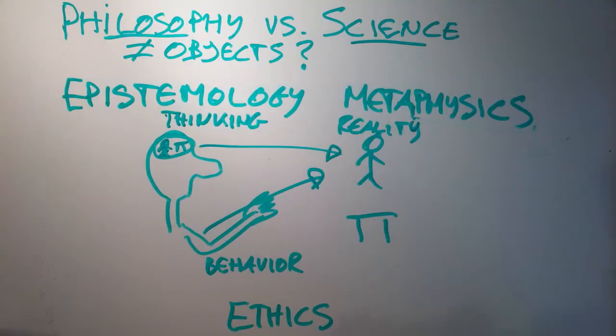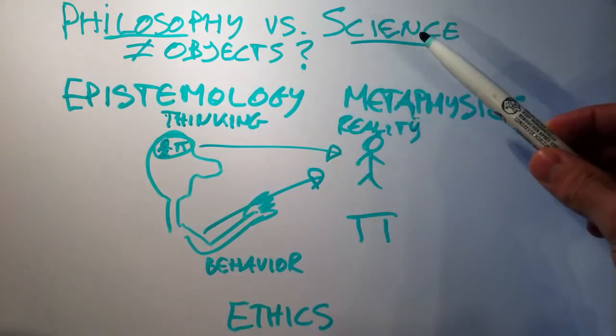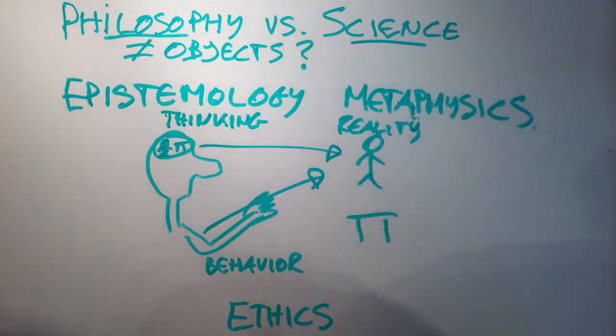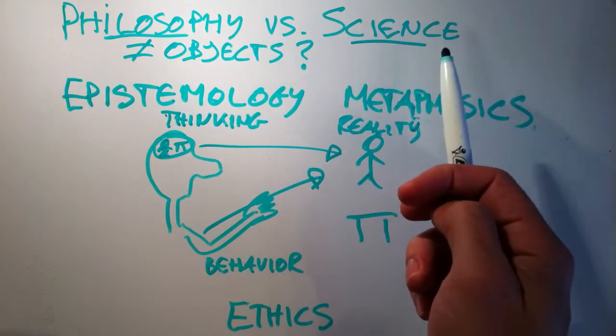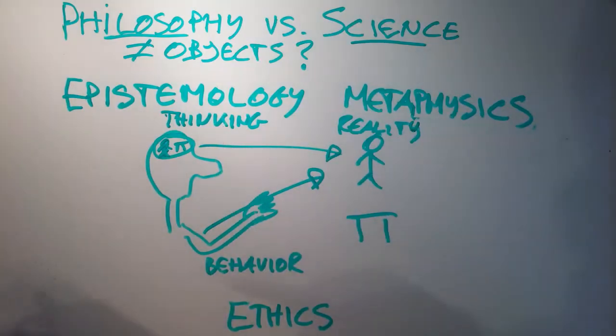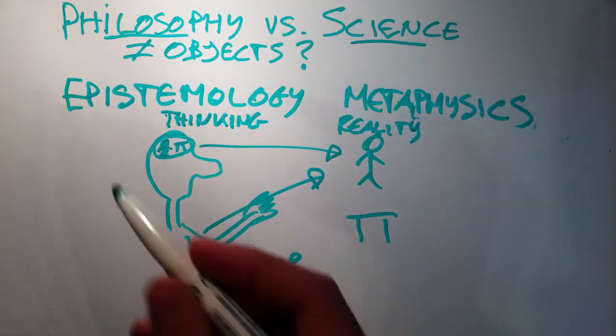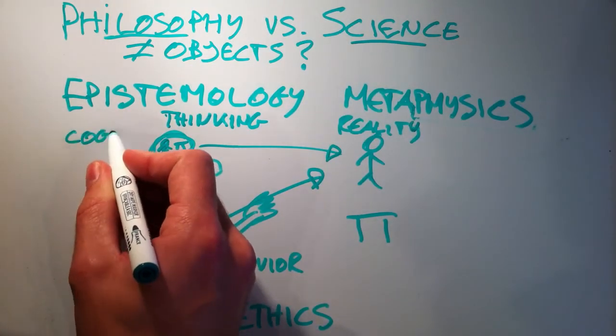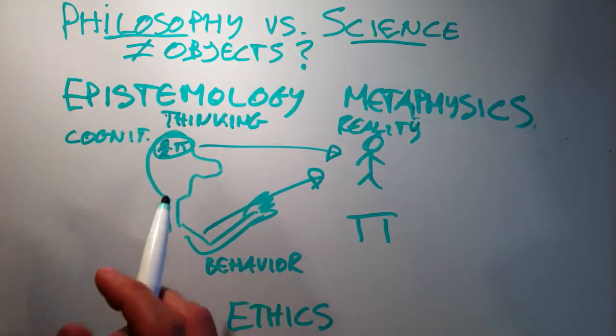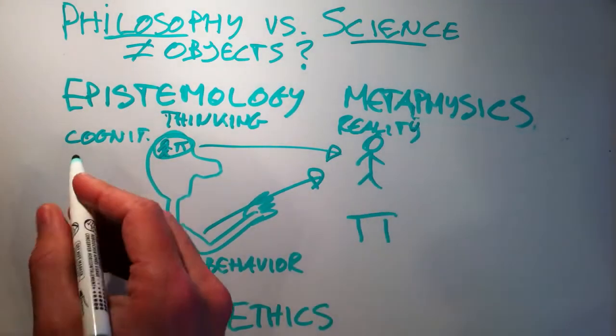However, one might wonder what the difference here is between philosophy and science. Take a look at epistemology. Aren't there branches of real science which are about thinking? Psychology, for instance, is about thinking. Moreover, cognitive psychology is really about how people acquire knowledge about things.